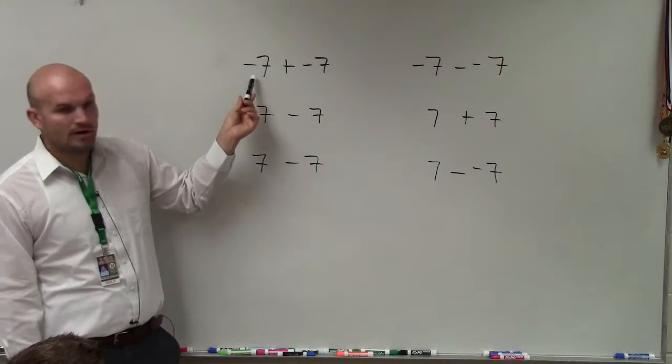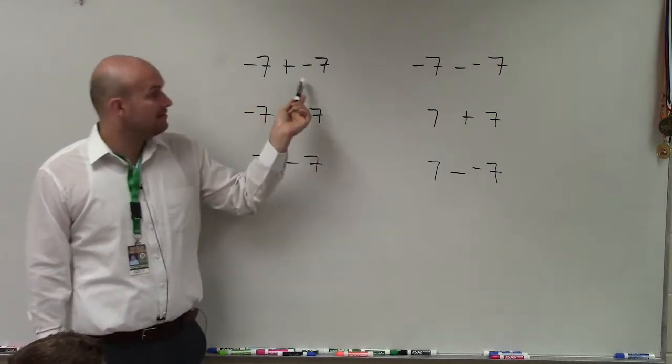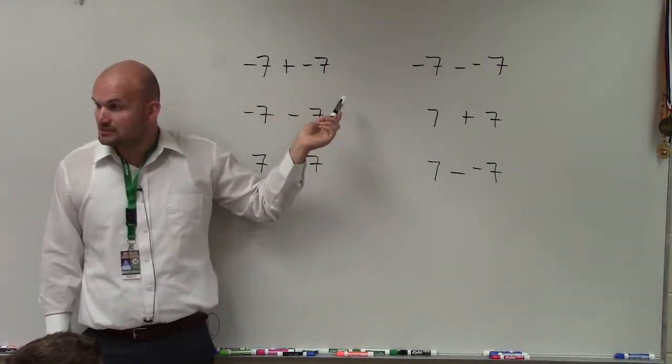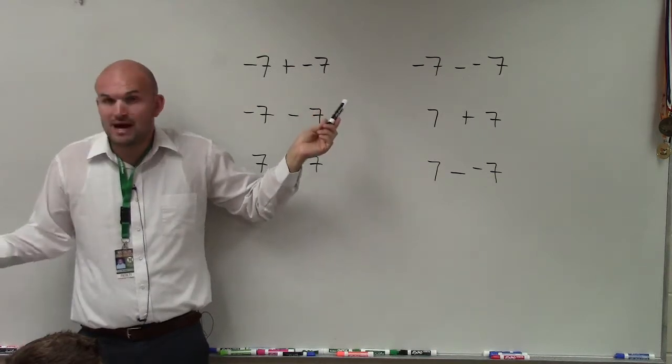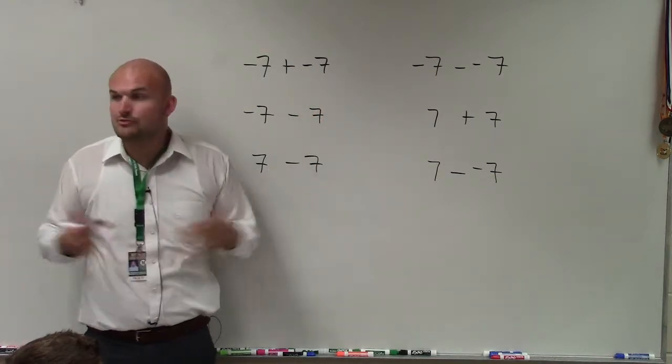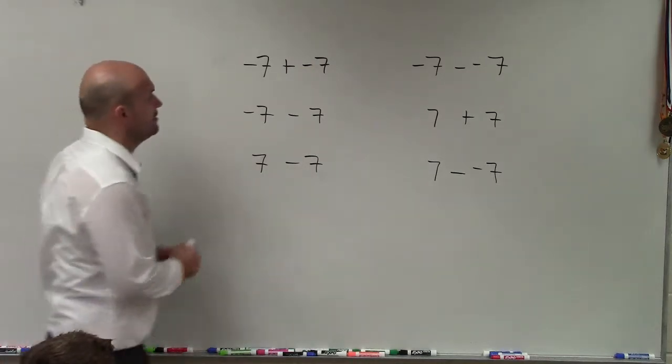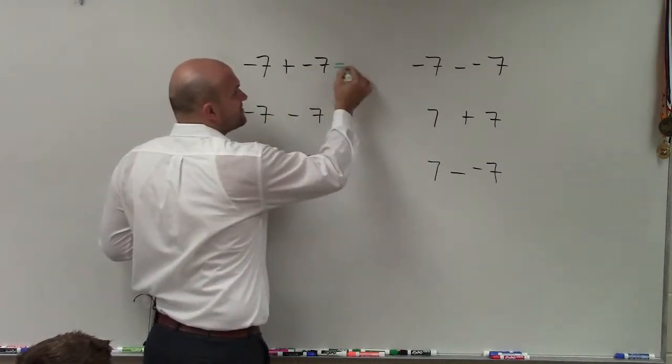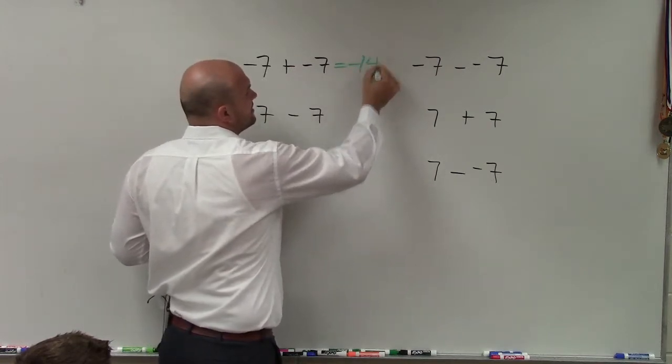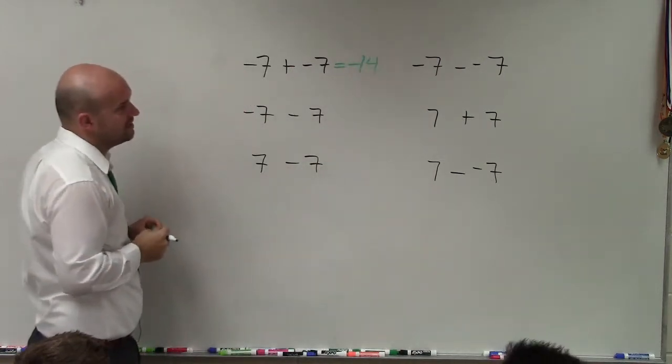So here would be like you owe one person $7, and then plus you owe somebody else $7. So therefore, the total amount, your total value, is you now owe how much? $14. So negative 7 plus a negative 7 is always going to be negative 14.